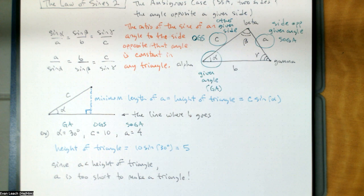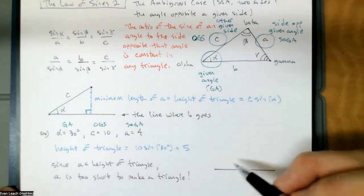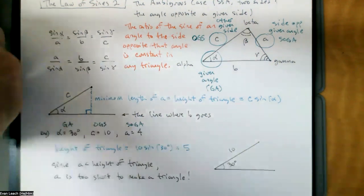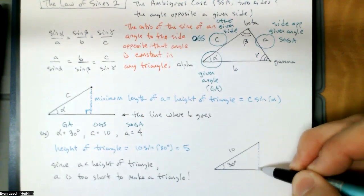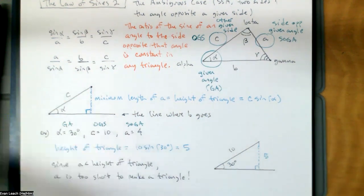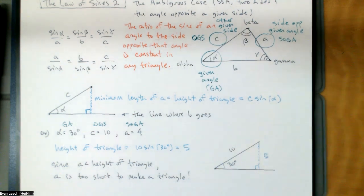A is too short to make a triangle. If I make a 30-degree angle, the shortest distance from the end of the hypotenuse down to where the third side is going to be is five. A is only four, so A is too short to cover that distance. Four is less than the height of the triangle — it's too short. So if I attach a four to the end of the 10, it just dangles there and can't reach the third side, making no triangle.